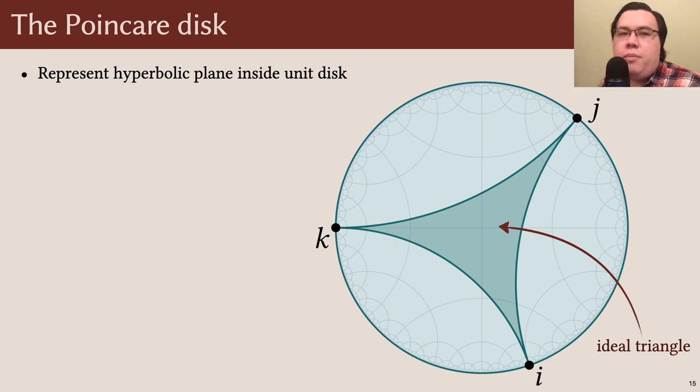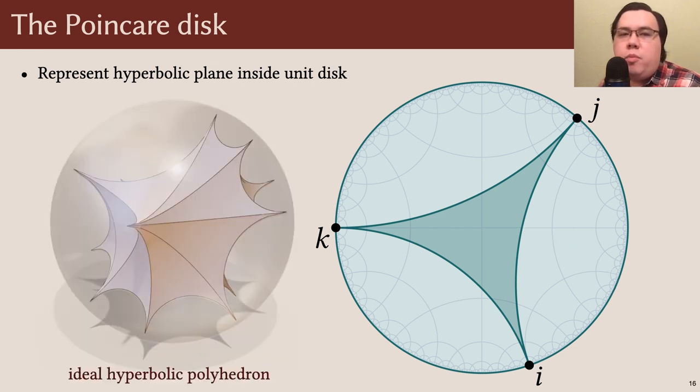Three ideal points connected by geodesics define an ideal triangle. These triangles have a number of odd properties. For example, each of their edges is infinitely long, but we can still glue these ideal triangles together to make what are called ideal hyperbolic polyhedra.